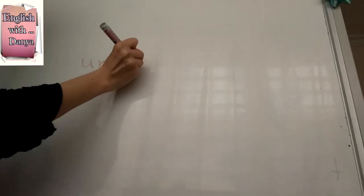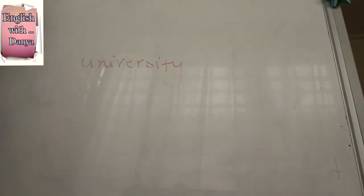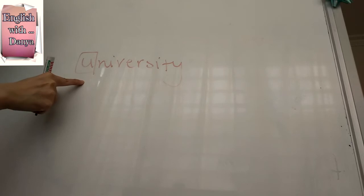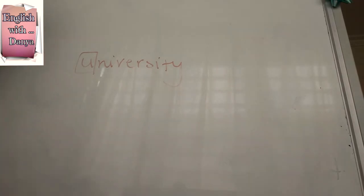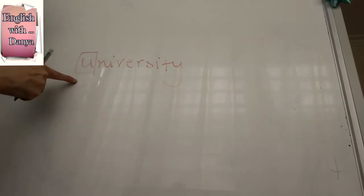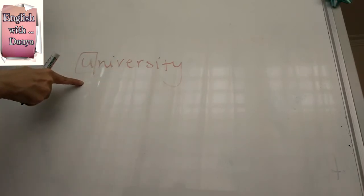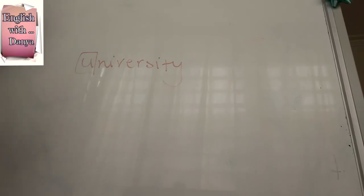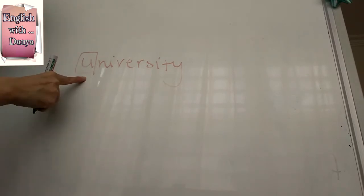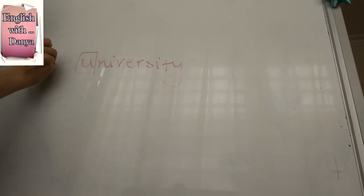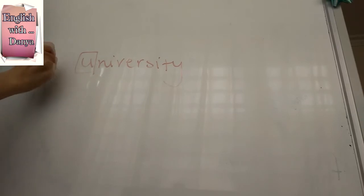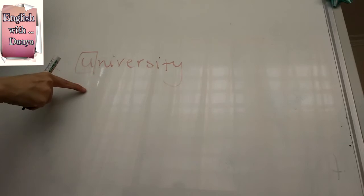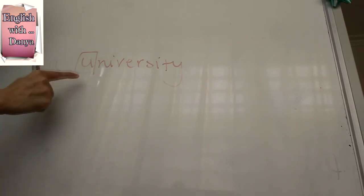Let's look at this example: 'university'. What is the first letter? It is U. But is U a vowel or a consonant? It is a vowel — but how do you pronounce it? Do you say 'a university' or 'an university'? You pronounce it as 'you' — university. So the sound of U here is not a vowel sound. Because of that, we say 'a university', not 'an university'. We are looking at the sound, not the letter.